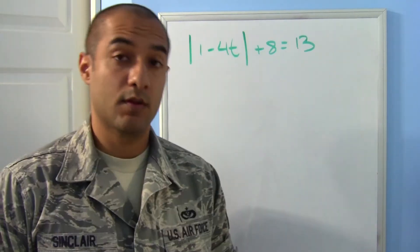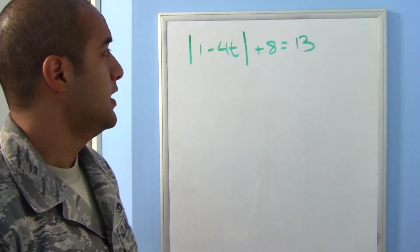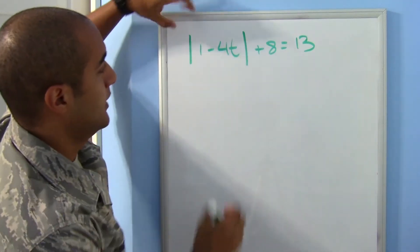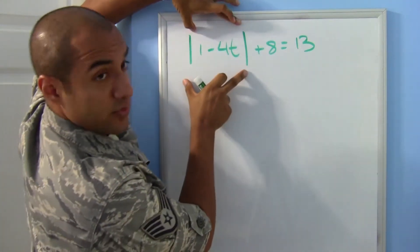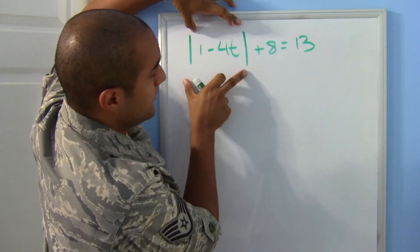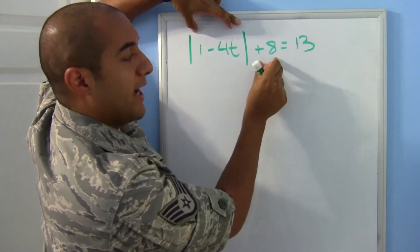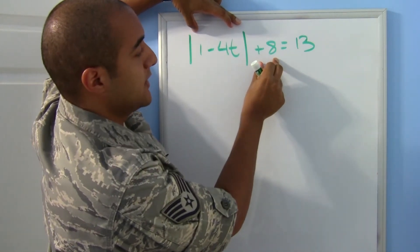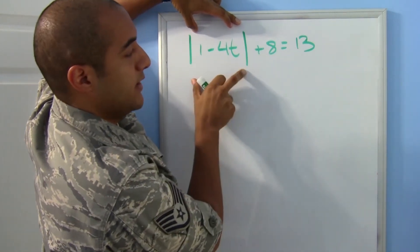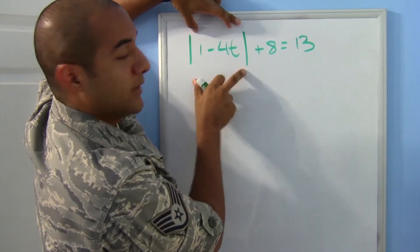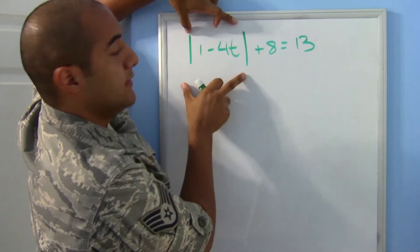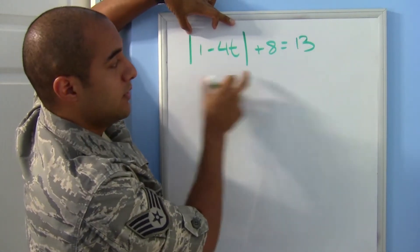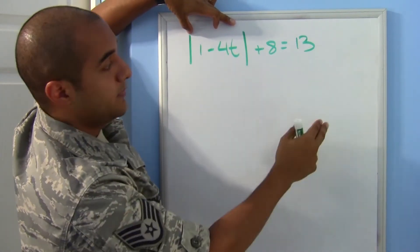Let's try this next one together. Notice that here I have my absolute value and my equal sign, but there's something extra on the outside of the absolute value. That means I can't split yet — the absolute value needs to be completely alone before you can do a split.